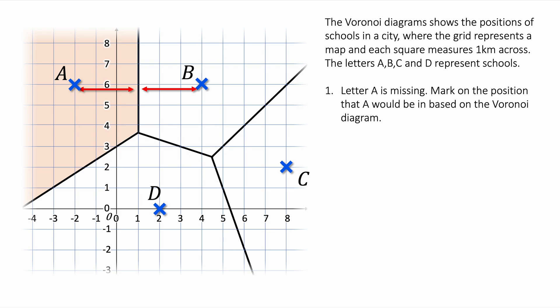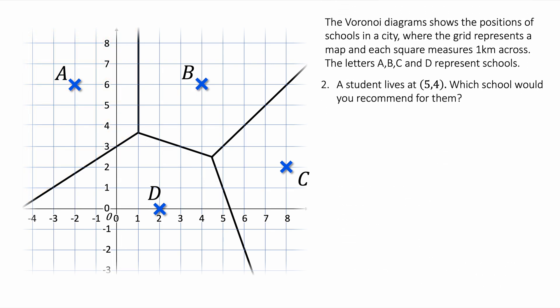Let's look at question two. A student lives at (5,4), which school would you recommend for them? Here is (5,4) and I'm looking at which school is closer to (5,4). (5,4) is inside the region of B, inside this yellow region here, so it's definitely going to be closer to B. I'd recommend that the student attends school B as it is closest to the student's house.